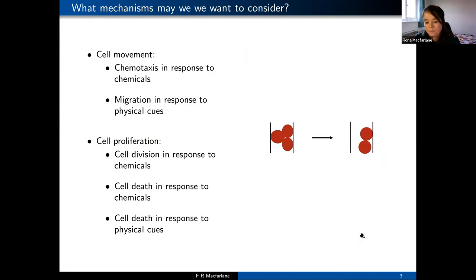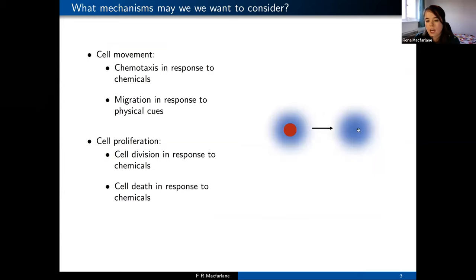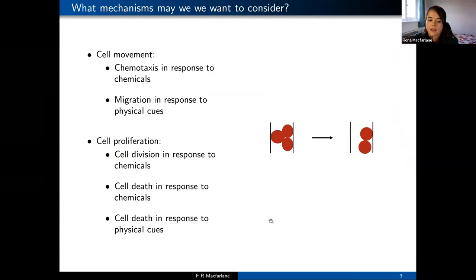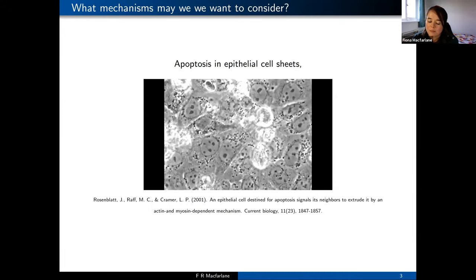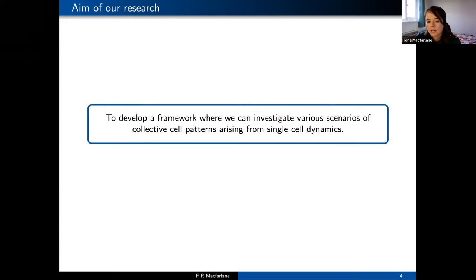As well as cell division we could have cell death, which could be in response to chemicals such as necrosis factors or apoptosis factors, or in response to physical cues — for example physical contact with other cells causing damage, or cells being squashed. In this video we see apoptosis in epithelial cell sheets: the apoptosis of a single cell is causing movement of cells around it as well. With these biological examples we can see these mechanisms have effects not only on single cells but on the wider population.